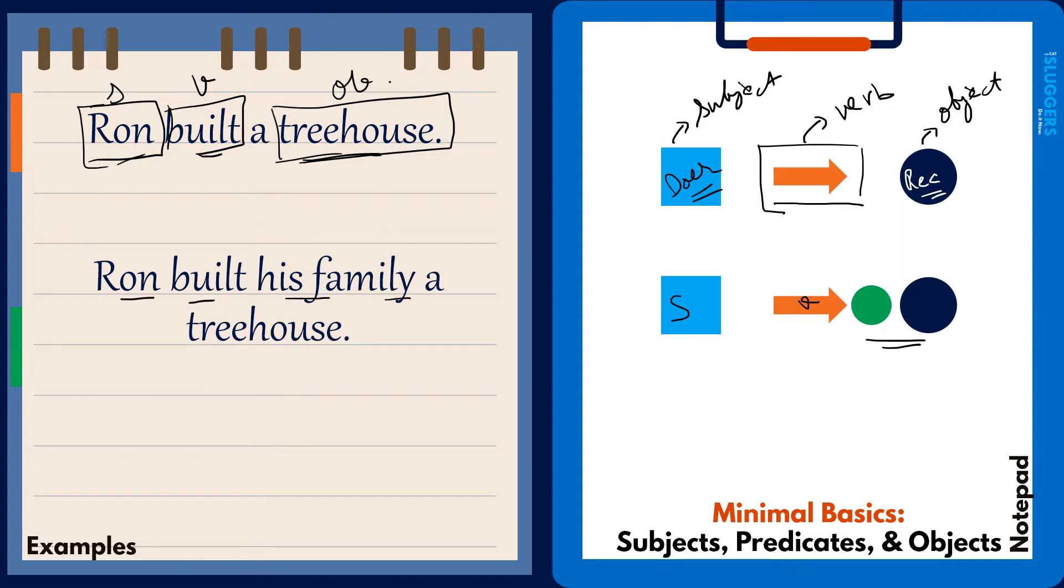It will look something like this: 'Ron built his family a tree house.' Now you can see here that you have just one action word, which is the verb 'built.' You have only one subject, which is Ron. But so far as objects are concerned, you have two of them - one is the family, Ron's family, and the tree house.